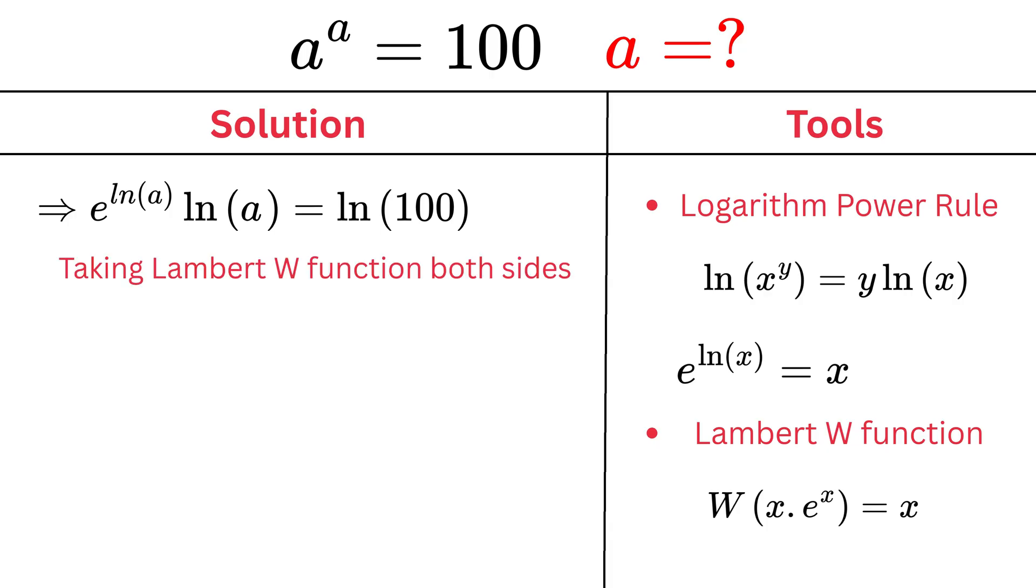If we take the Lambert W function of both sides, we get Lambert W of e raised to the power of the natural log of a multiplied by the natural log of a equals Lambert W of the natural log of 100.